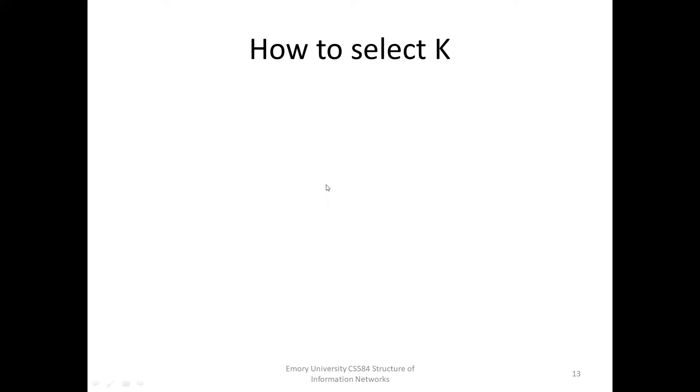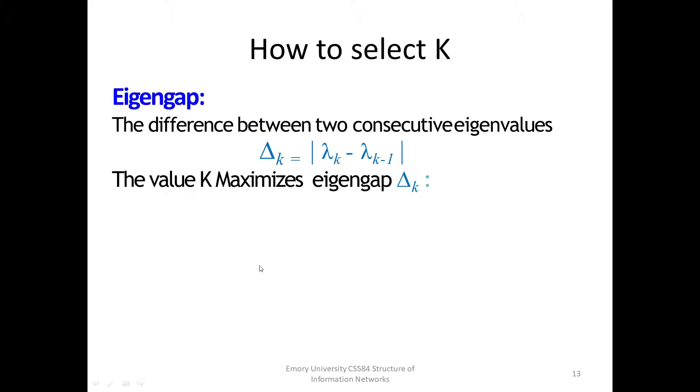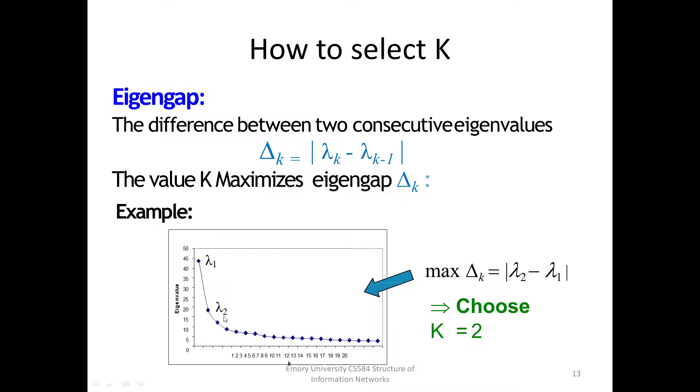The last point: How to select the cluster number? Eigengap is the difference between two consecutive eigenvalues. The cluster number is the value k that maximizes eigengap. In this example, the eigengap between lambda 2 and lambda 1 is the biggest. So, cluster number k equals 2.